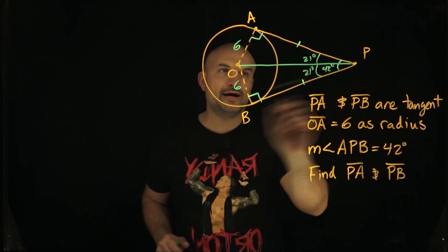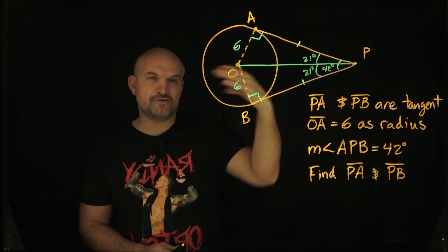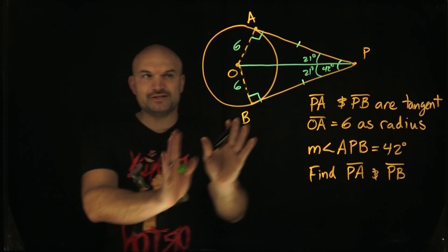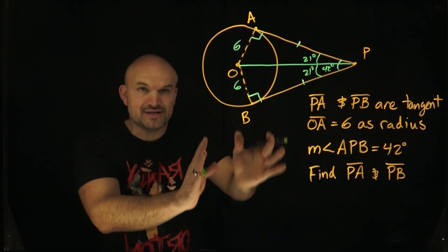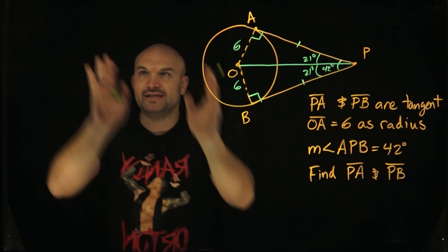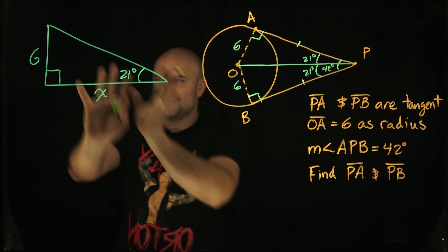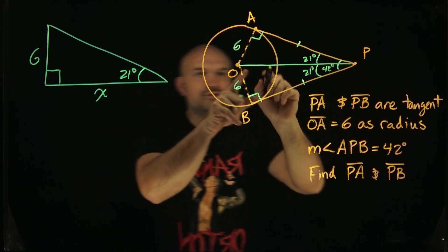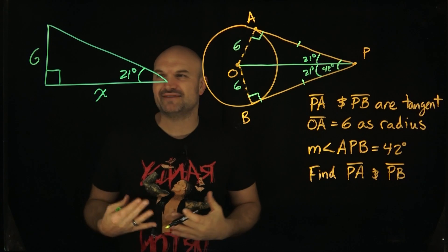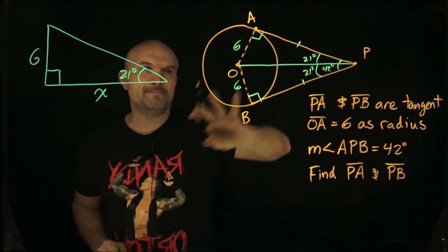The problem says find PA and PB. I only need to find one of these because I know the measures are going to be exactly the same. The third mistake students make is they try to do calculations while looking at the complex figure. Instead, what I'm going to do is take my calculations over here with a fresh, clean triangle. It's much easier to compute something like this when it's not mixed into a complex figure.